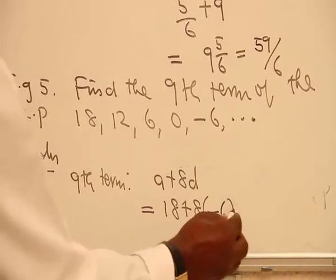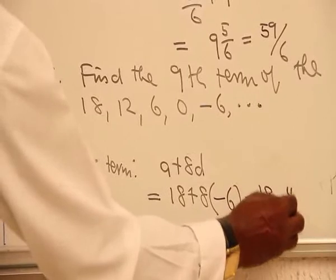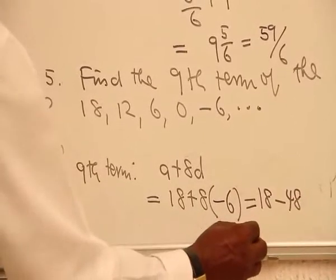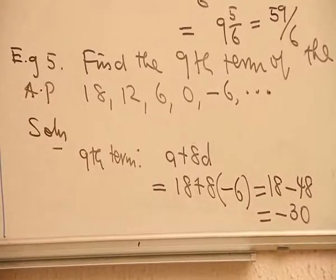The result of this will be 18 minus 48, and that will be equal to minus 30.